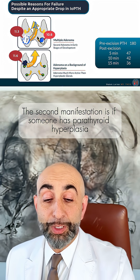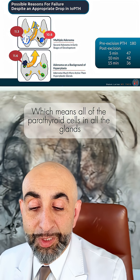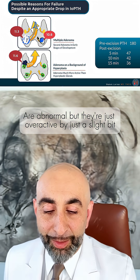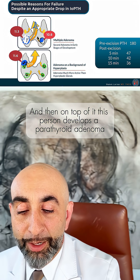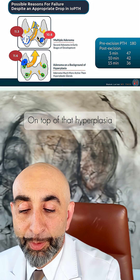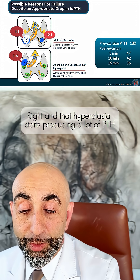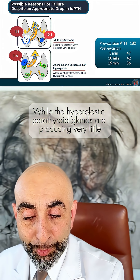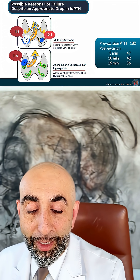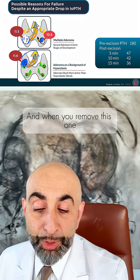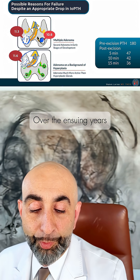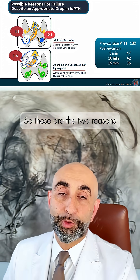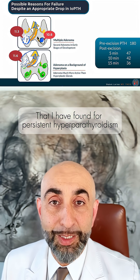The second reason is if someone has parathyroid hyperplasia, which means all of the parathyroid cells in all the glands are abnormal, but they're just overactive by just a slight bit. And then on top of it, this person develops a parathyroid adenoma — a tumor — right on top of that hyperplasia. That adenoma starts producing a lot of PTH while the hyperplastic parathyroid glands are producing very little. This basically hijacks the system, and when you remove the adenoma, over the ensuing years, these parathyroid glands get bigger and bigger and show themselves.